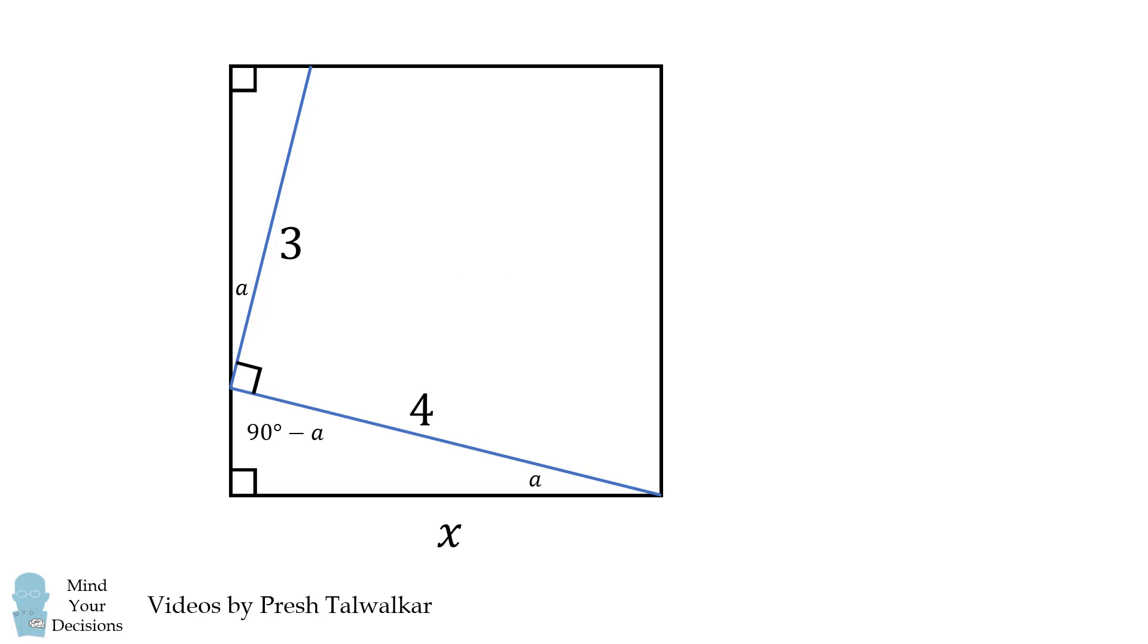Now, we have a right angle here in this corner of the square. So, the final angle in this triangle will be 90 degrees minus A. We can see that corresponding angles of these two triangles are equal, and therefore, these two triangles are similar.